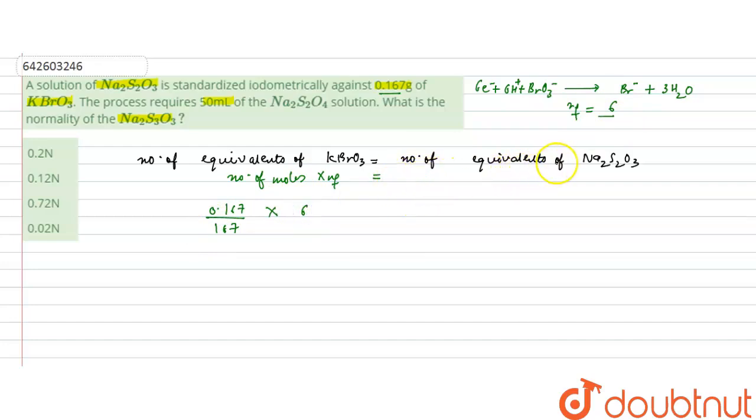And number of equivalents of sodium thiosulfate solution will be volume into its concentration. Volume is given 50 ml, we will convert this into liters by dividing by 1000, into its concentration or normality we will write N.